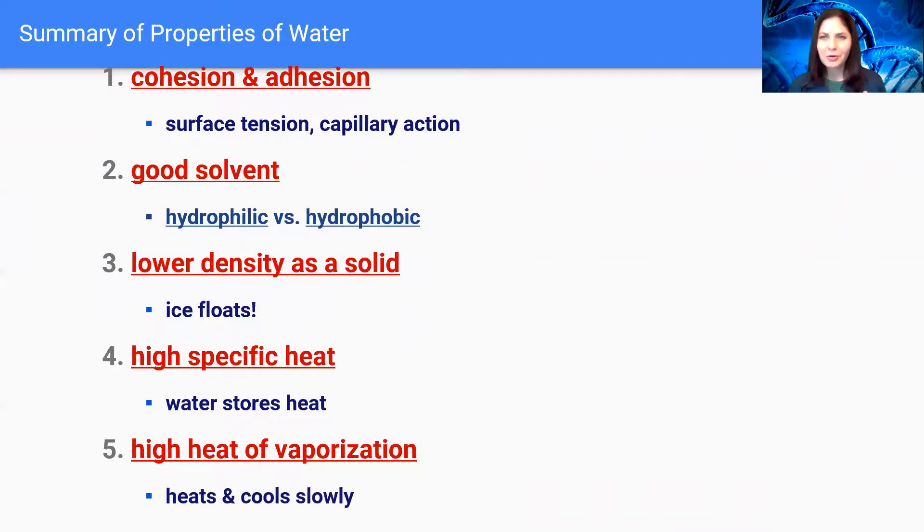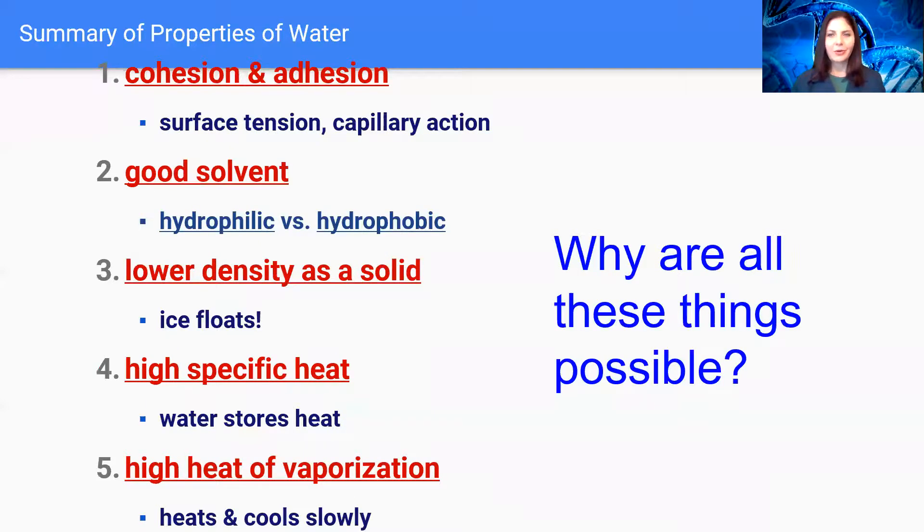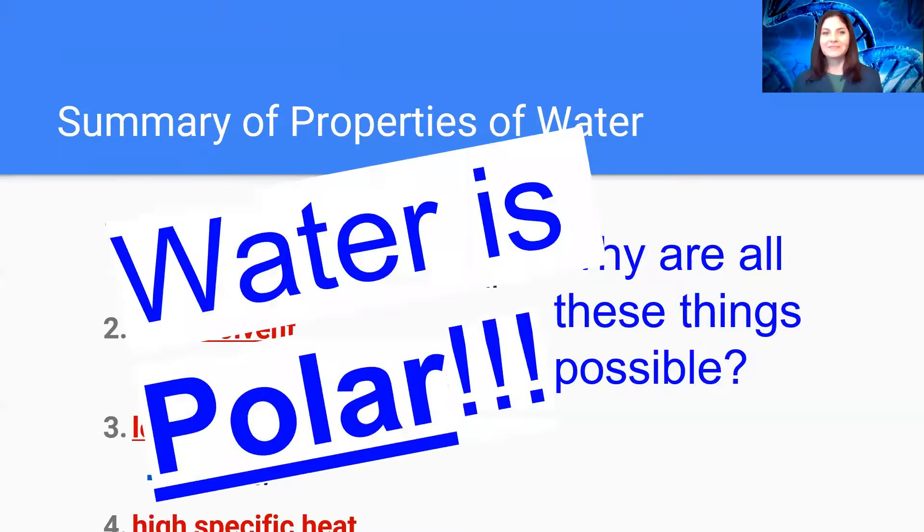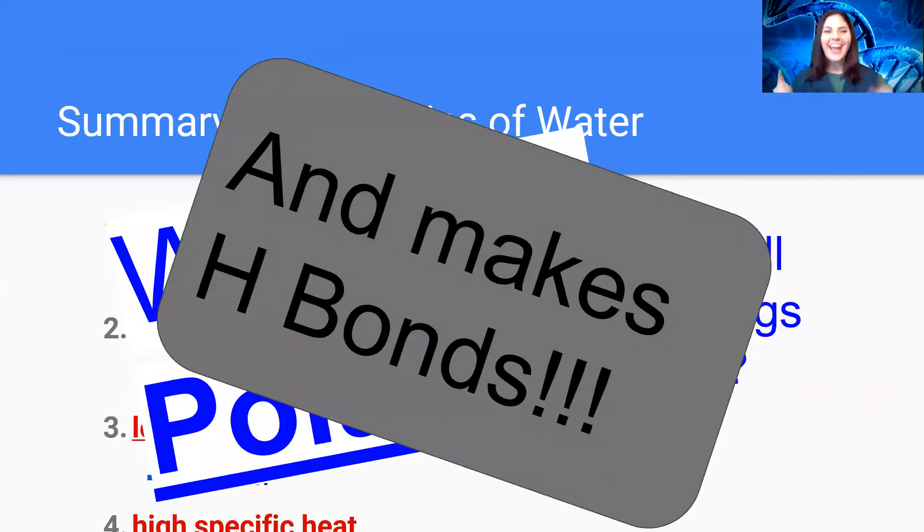So quick summary so far of our properties of water. We have cohesion and adhesion. Those together can give us the idea or give us that property of surface tension, and it also has to deal with capillary action. Water is a very good solvent unless we're talking about hydrophobic compounds that are nonpolar. It is a fantastic solvent for hydrophilic substances that are polar. It has a lower density as a solid and it has a very high specific heat as well as a high heat of vaporization. Why are all of these things possible? Water is polar and it makes hydrogen bonds.